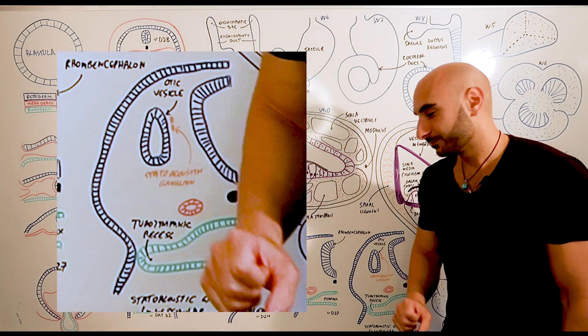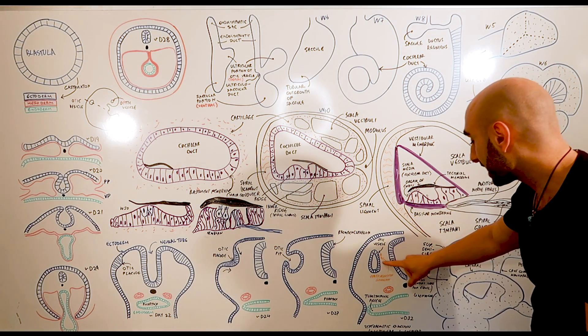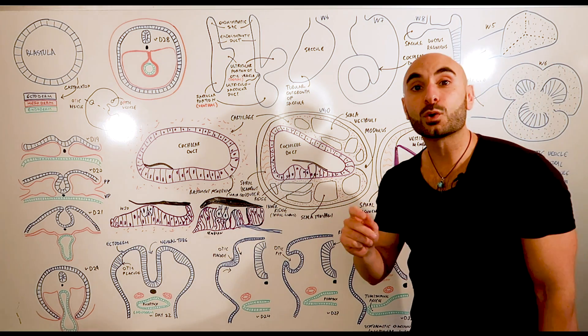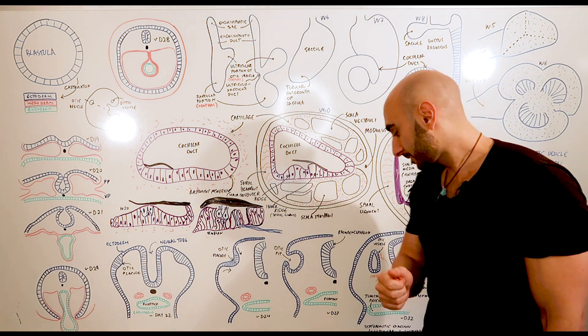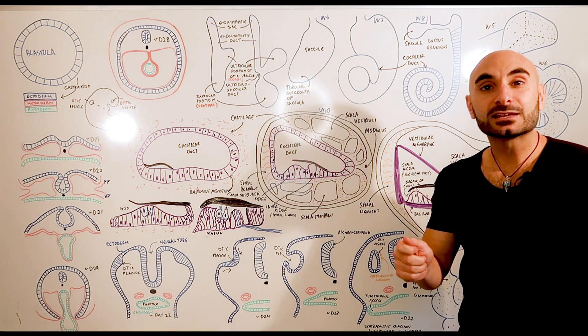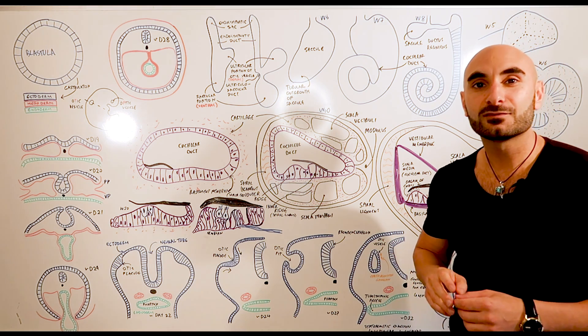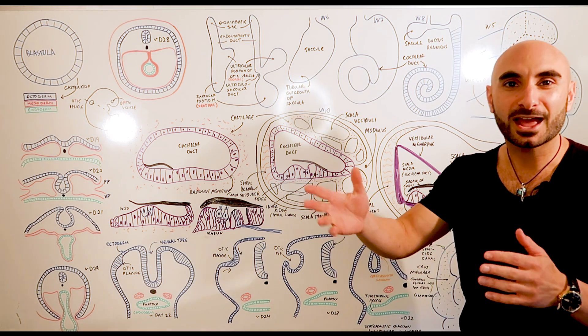What's that? There are two. The statoacoustic ganglion will eventually form both the vestibular and the cochlear ganglions of the cranial nerve 8, vestibular cochlear nerve, CN8.